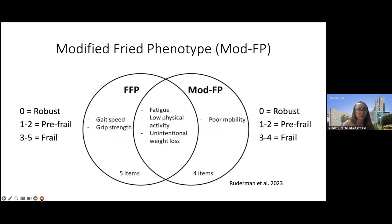Because of this, there have been some modifications to the Fried Phenotype — asking, do we really need the hand grip test or speed test? Is a modified version better than nothing if we don't have the resources? One modification, aptly called the Modified Fried Phenotype, replaces gait speed and grip strength with a subjective question of poor mobility. It has the same lower cutoffs for pre-frail and frail.